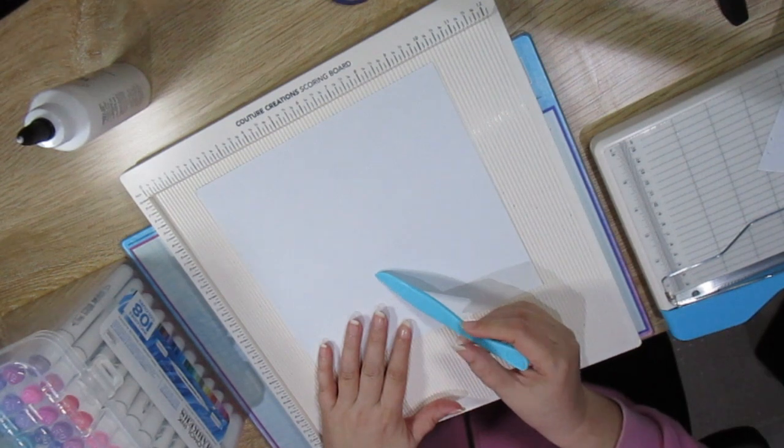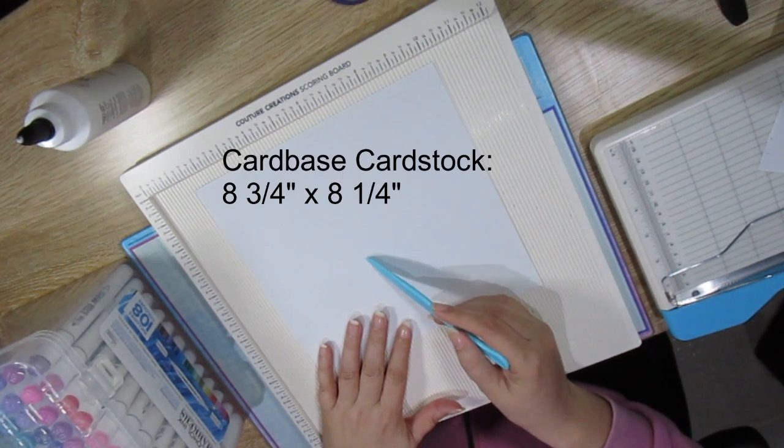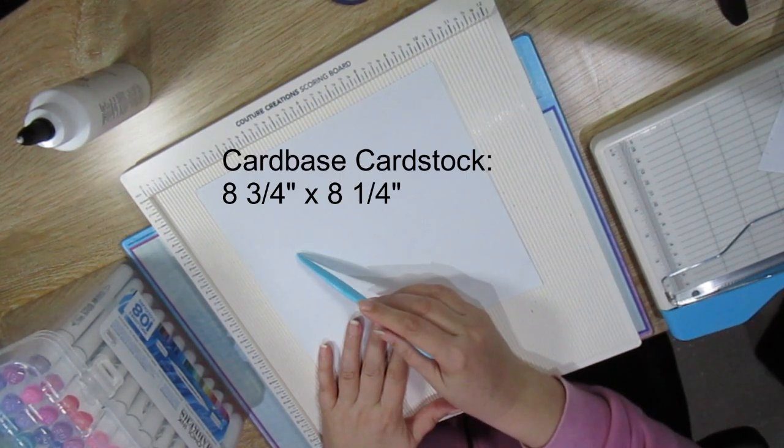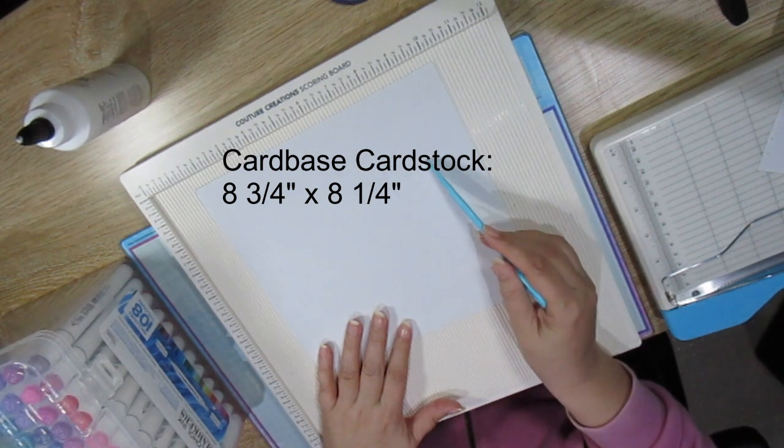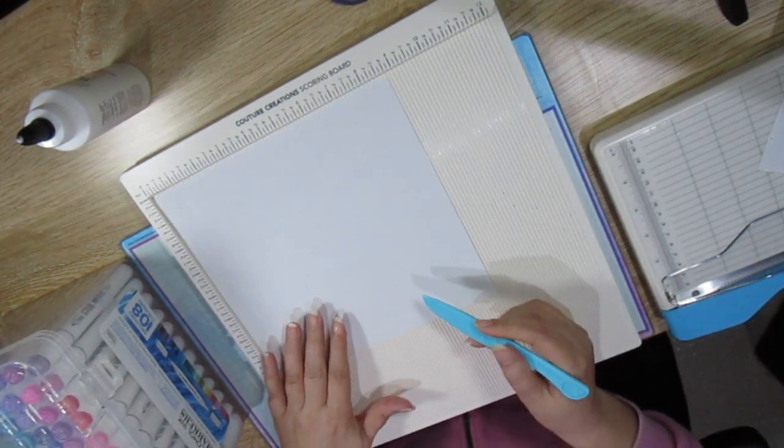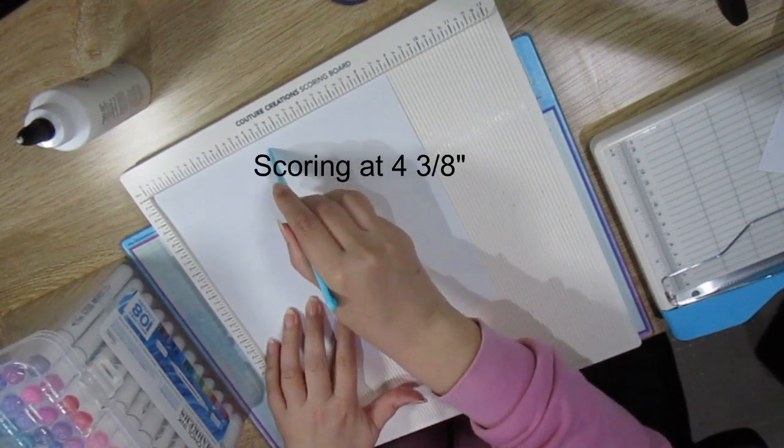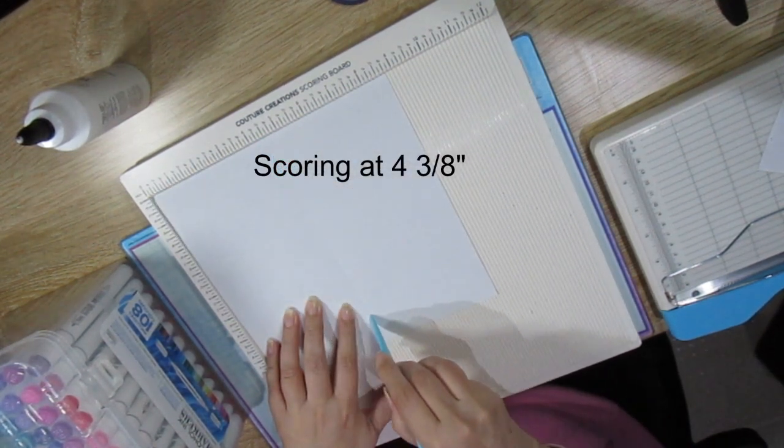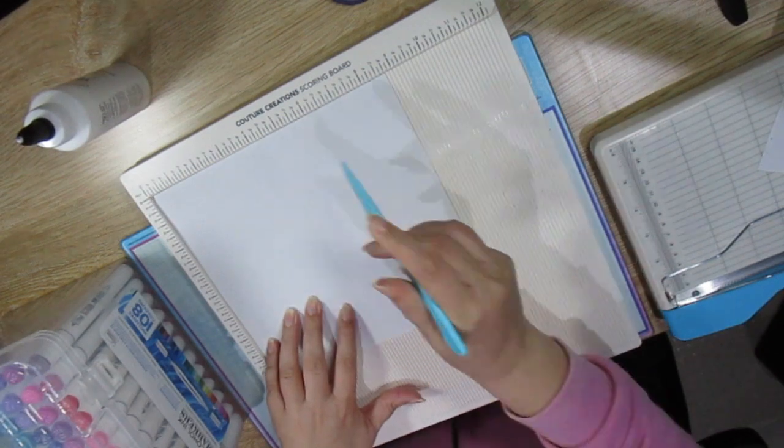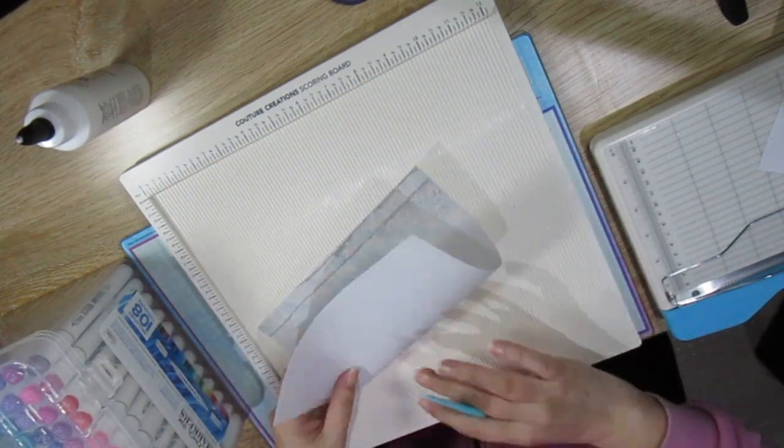For the card base you will need a piece of cardstock that measures eight by three quarter and eight one quarter. I'm going to score it with a Kachur Creation scoring board at four and three eighths. I'm going to fold the scoring line.